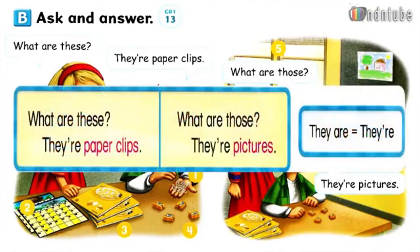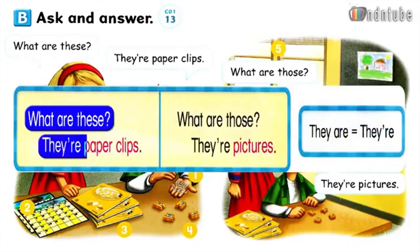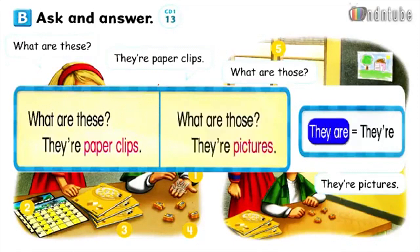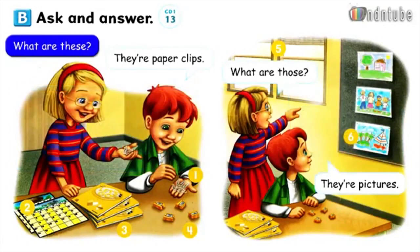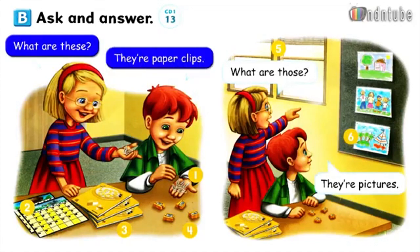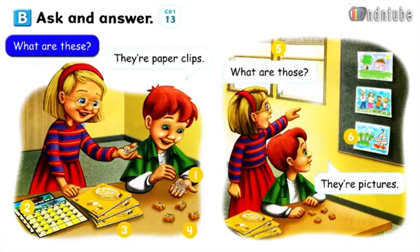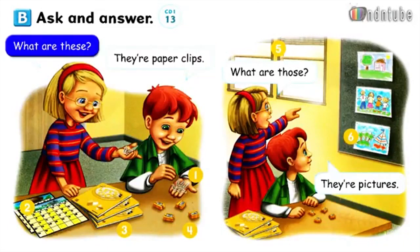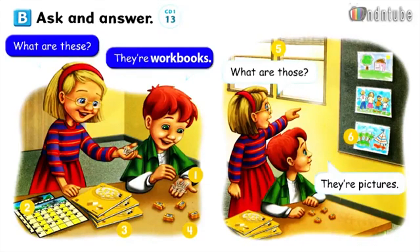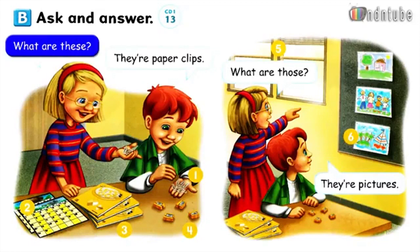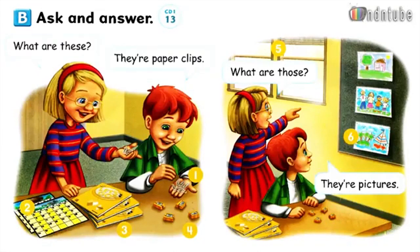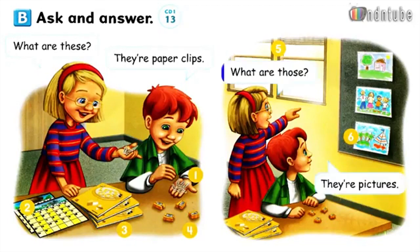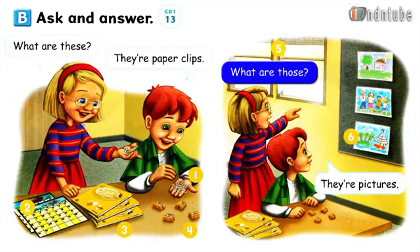Page 8. Drum track. What are these? They're paperclips. What are those? They're pictures. They are. They're. What are these? They're paperclips. What are these? They're calendars. What are these? They're workbooks. What are these? They're pencil sharpeners. What are those? They're windows. What are those? They're windows.